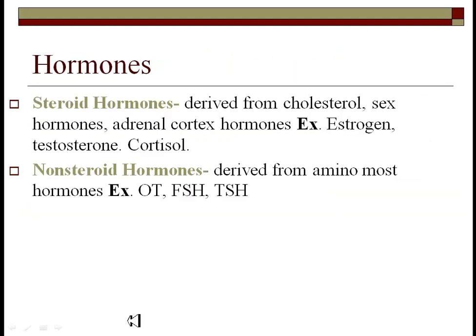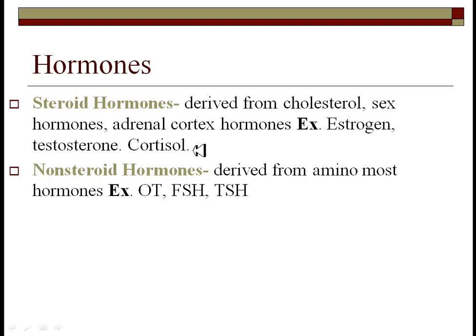The two basic types are steroid and non-steroid hormones. Steroid hormones are based in cholesterol; non-steroid hormones tend to be based in amino acids. Oxytocin, follicle stimulating hormone, and thyroid stimulating hormone are all examples of non-steroid hormones. Estrogens, testosterone, and cortisol from the adrenal cortex are based in cholesterol. The other key difference is how they cross the membrane: a steroid hormone diffuses straight through the cell membrane and acts internally, whereas a non-steroid hormone binds to receptors on the outside of the cell membrane and does not cross it.